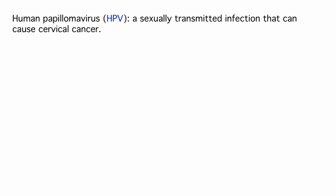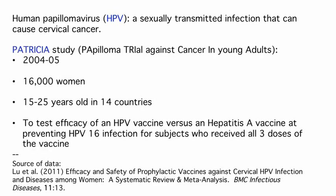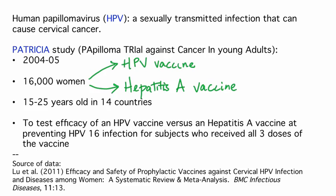We'll look at data from the PATRICIA study, a large study in 2004–05 that recruited over 16,000 women aged 15 to 25 from 14 countries. Women were randomly assigned to receive either the HPV vaccine or a hepatitis A vaccine in a three-dose regimen and were followed for three years. Our analysis includes only women who received all three doses, and we'll consider whether or not a subject contracted a persistent HPV-16 infection during the three years of the study.